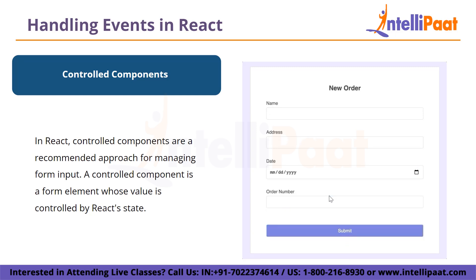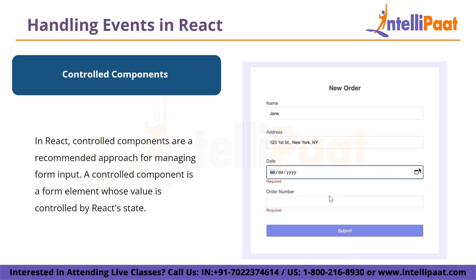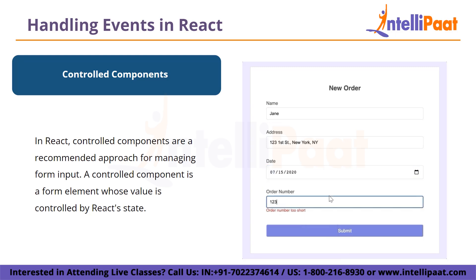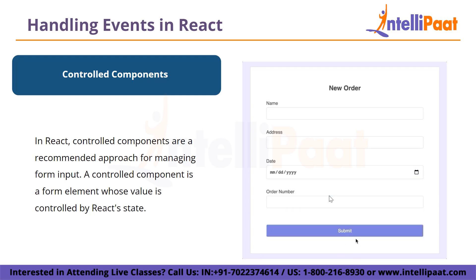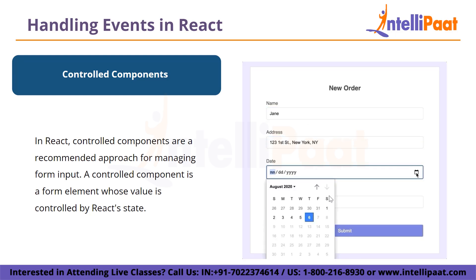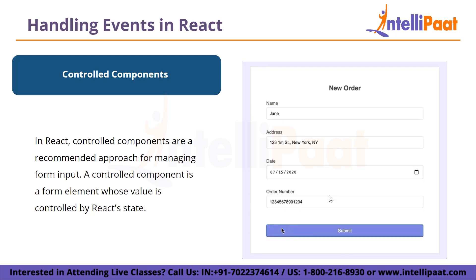Controlled components are a recommended approach for managing form input. A controlled component is a form element whose value is controlled by React state, meaning the component state holds the current value of the input, and any changes to the input trigger an update to the state. To create a controlled component, you need to define a state property corresponding to the input value, then attach an onChange event listener to the input element and update the state with the new value whenever the user interacts with the input.